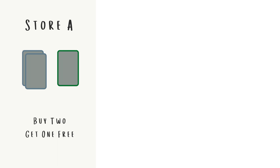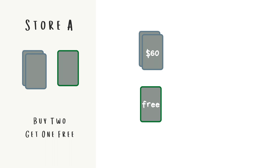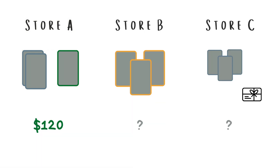If we were to buy the games from Store A, you would have to pay for two full-priced games, and the third one is free. Since each game is $60, 60 times 2 is $120. That would be our total price for three games.